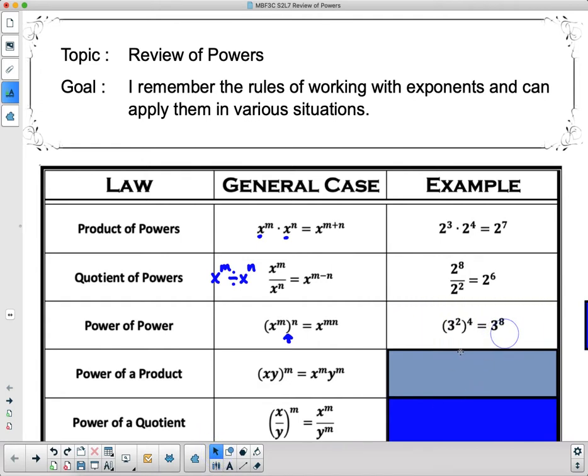So here's an example. If I have 3 squared all to the power of 4, the base stays the same, and I just multiply those two exponents. Because the 2 times the 4 gives us the 8.